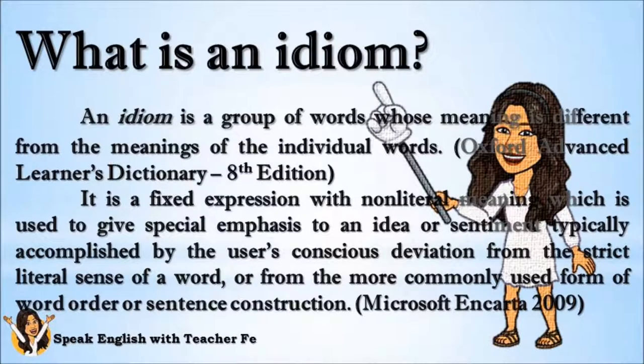What is an idiom? An idiom is a group of words whose meaning is different from the meanings of the individual words. It is a fixed expression with non-literal meaning which is used to give special emphasis to an idea or sentiment, typically accomplished by the user's conscious deviation from the strict literal sense of a word, or from the more commonly used form of word order or sentence construction.